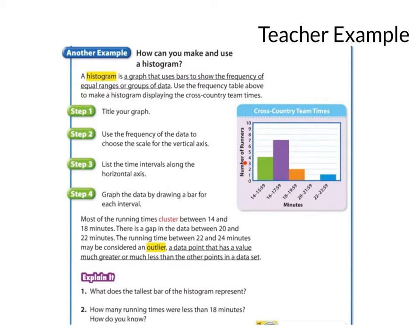If you had like 1,000 people race, you wouldn't go by 1s. Maybe you'd go by 10s. You'd go 0, 10, 20, 30. Depends how many pieces of information you have. And then you're going to list the time intervals along the horizontal axis. And then make the bars.